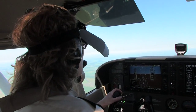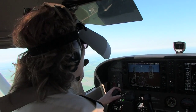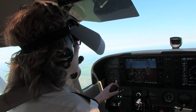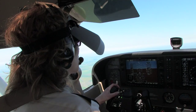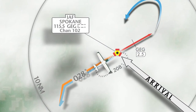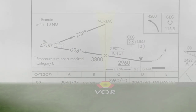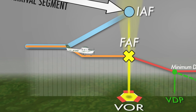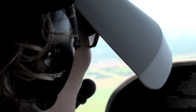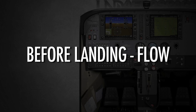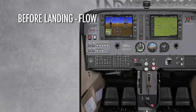'Crookston area traffic, Sioux 7-3, 5 miles on the final approach course for the VOR runway 3-1, full stop, Crookston.' As the pilot continues the approach procedure and nears the final approach fix, she should execute the before landing checklist. The checklist prepares the aircraft and its occupants for landing. It should be initiated prior to reaching the final approach fix.